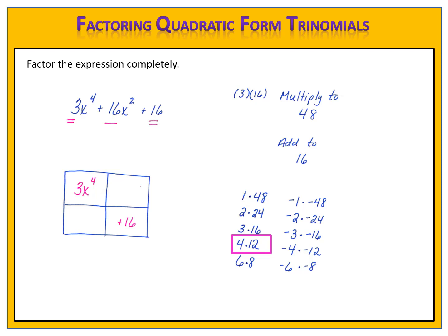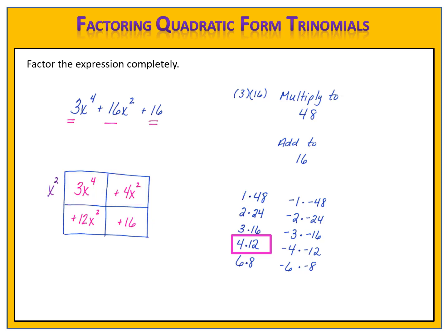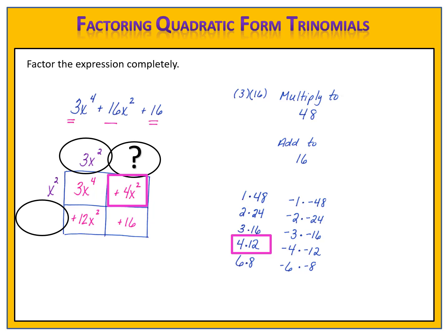I'll put those into the grid. Because the middle term of the trinomial has x squared, both of those terms will have x squared: 4x squared and 12x squared. I factor the greatest common factor out across the top — the greatest common factor is x squared — and use multiplication to fill in the remaining spots. x squared times 3x squared is 3x to the 4th. x squared times 4 is 4x squared. 3x squared times 4 is 12x squared. I check: 4 times 4 equals 16. ✓